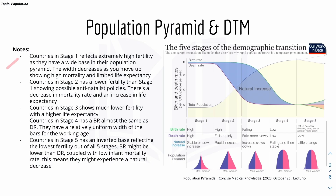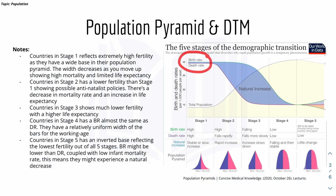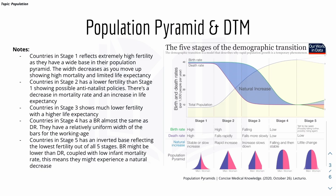Countries in stage one reflect extremely high fertility as they have a wide base in their population pyramid. The birth rate is the highest out of all stages and the death rate is also high, meaning more babies are born every year. The width of the pyramid decreases as you move up, showing a high mortality rate and limited life expectancy. Moving to stage two, where the country gets more developed, the fertility rate decreases so the birth rate decreases, making the base slightly smaller though still wide.